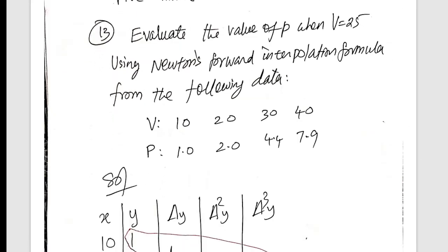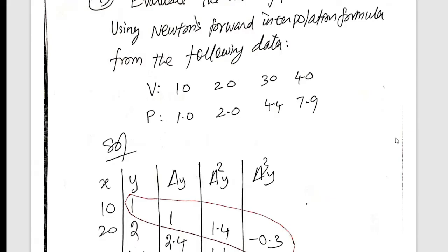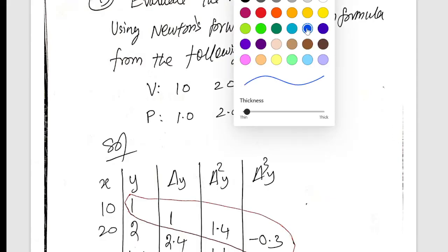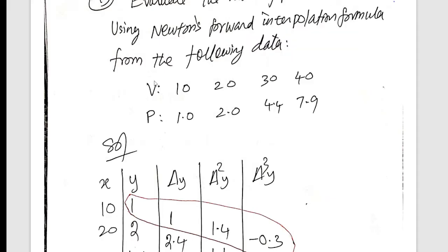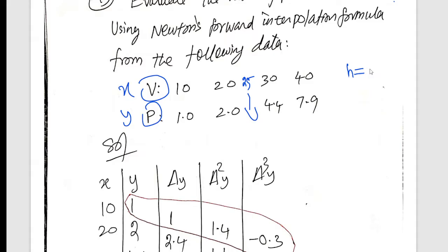So what I'm going to say is Newton's forward interpolation formula. Here x value is 25, and the answer is 2 and 4, 4.4. If the interval is 10, 20, 30, difference is 10 to 10, then h value is 10.